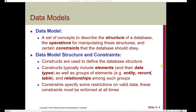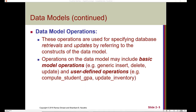The data model structure is defined by constructs. Constructs typically include elements with their data types, as well as groups of elements — for example, an entity, record, and a table — and relationships among such groups. Constraints specify some restrictions on valid data that must be enforced at all times. A data model also has operations used for specifying database retrievals and updates by referring to the constructs of the data model — ways to get data and also update data inside the database.